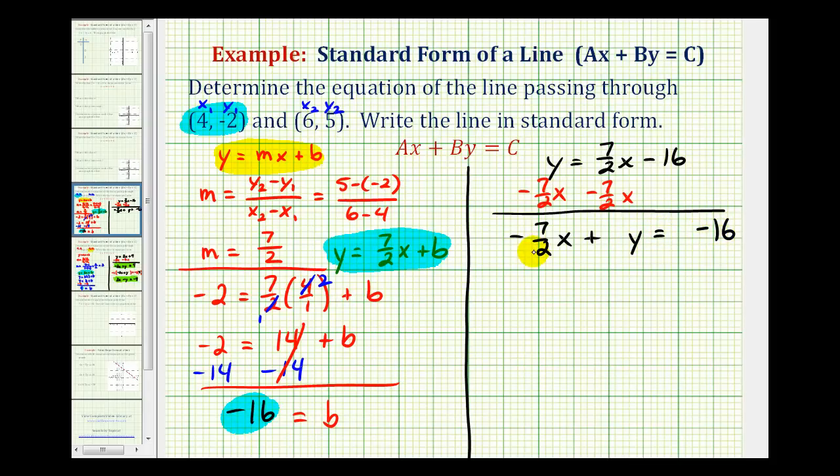The next thing is, notice the coefficient of x is a fraction, so we can't leave it in this form. So to clear the fractions, we'll have to multiply everything by two. We'll multiply this by two, we'll multiply this by two, and we'll multiply this by two. Notice here the twos simplify out, and we're left with negative seven x plus two y equals negative thirty-two.